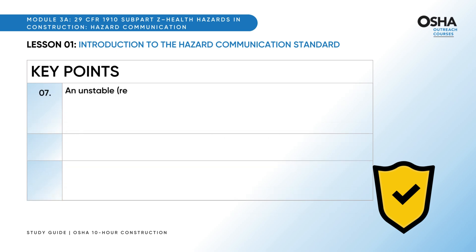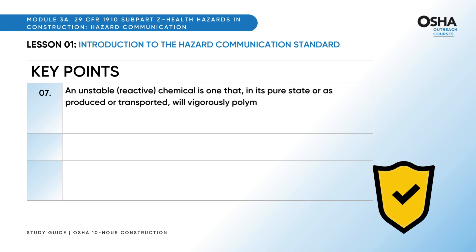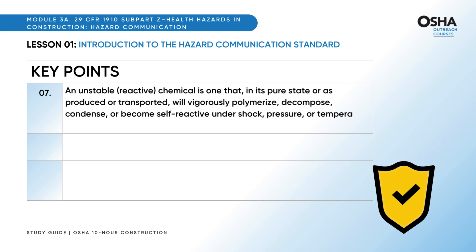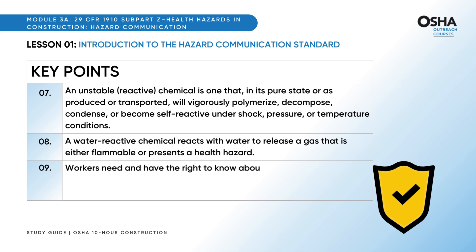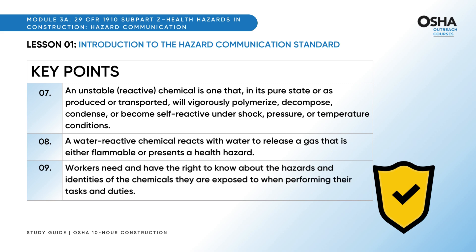An unstable, reactive chemical is one that, in its pure state or as produced or transported, will vigorously polymerize, decompose, condense, or become self-reactive under shock, pressure, or temperature conditions. A water-reactive chemical reacts with water to release a gas that is either flammable or presents a health hazard. Workers need and have the right to know about the hazards and identities of the chemicals they are exposed to when performing their tasks and duties.